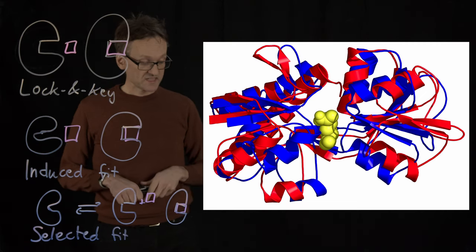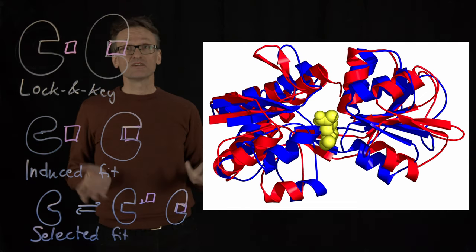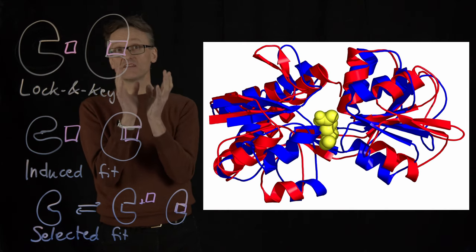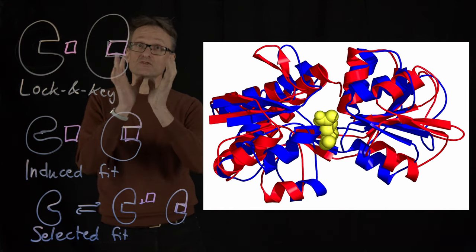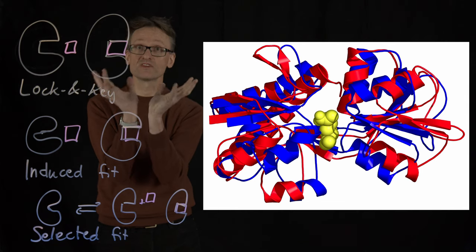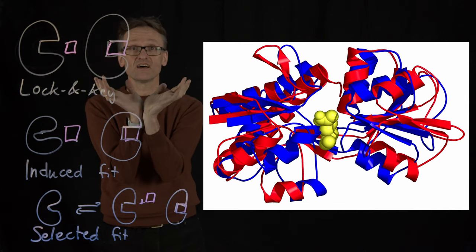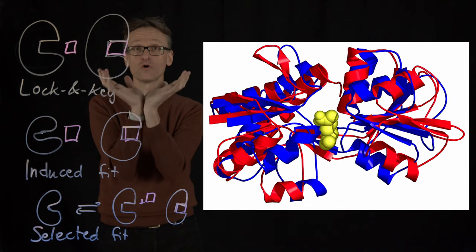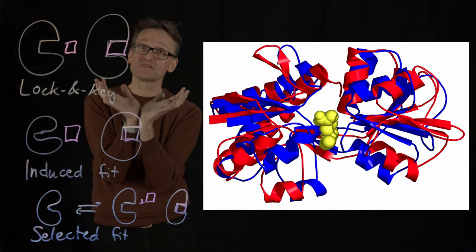This glutamate binding protein is actually an example of the last, selected fit. You have a protein, the red and blue part here, and the red and blue structures they really describe the so-called breathing motion of this small cavity. And so it can be either more closed or more open.